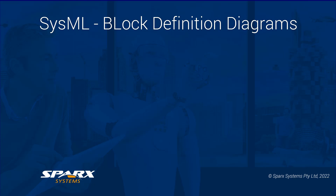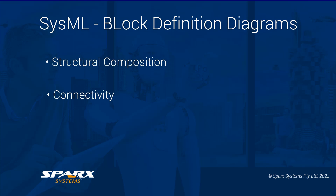The objects in these diagrams define what is to be used. This is distinct from how these are used as specific instances, which we will cover later in the internal block definition diagram or IBD. The core points that blocks convey are structural composition, connectivity, and classification.